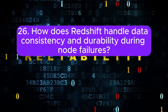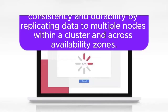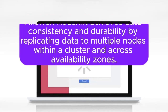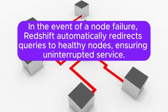Question 26: How does Redshift handle data consistency and durability during node failures? Answer: Redshift achieves data consistency and durability by replicating data to multiple nodes within a cluster and across availability zones. In the event of a node failure, Redshift automatically redirects queries to healthy nodes, ensuring uninterrupted service.